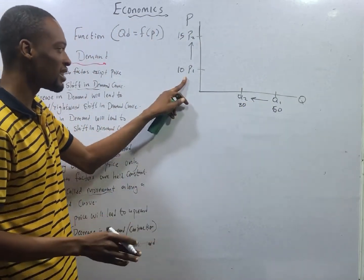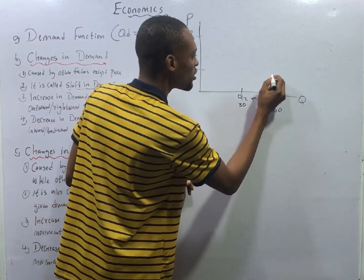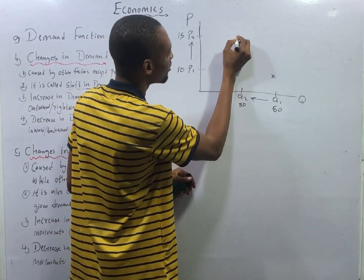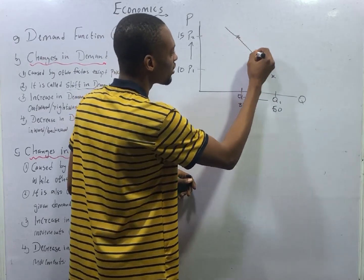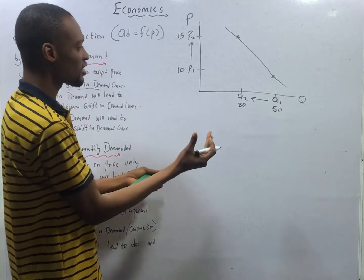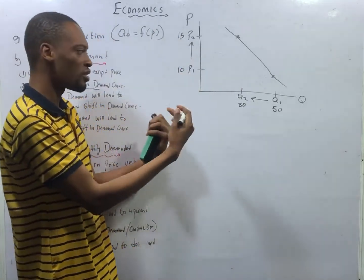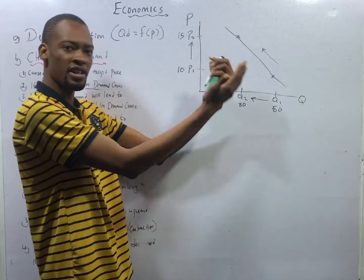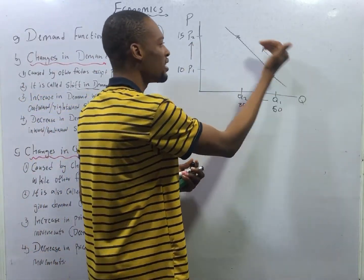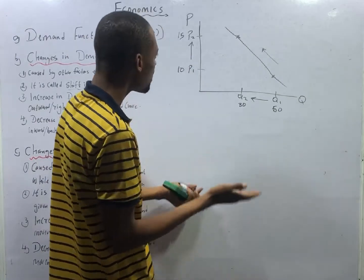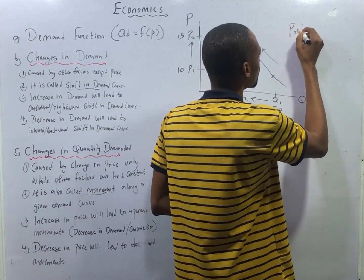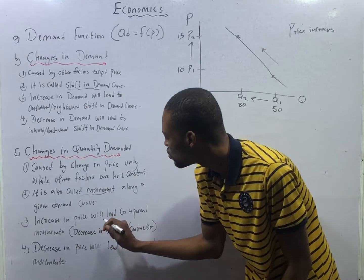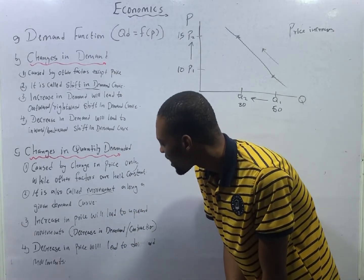When price was P1, quantity was 50. As price goes to P2, quantity has dropped to 30. So we now have a slope like this. As price keeps increasing, quantity keeps dropping. It will be moving this way — as price is increasing, quantity shifts backward. So increase in price leads to upward movement and decrease in quantity demanded. You can see it is moving upward towards the left.